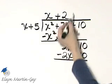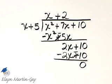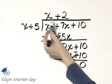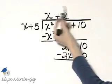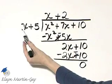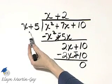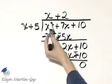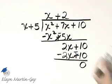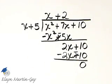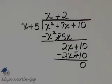My quotient is x plus 2. How can you check? Multiply this binomial by your divisor binomial, x plus 5, and you should get that dividend trinomial.